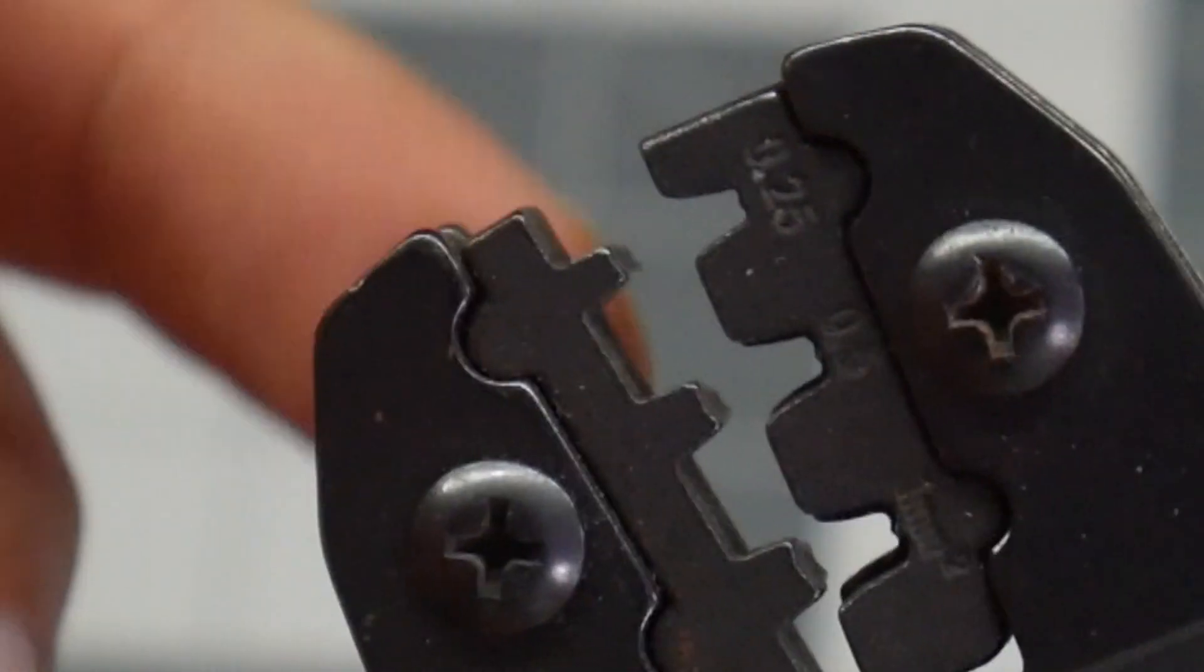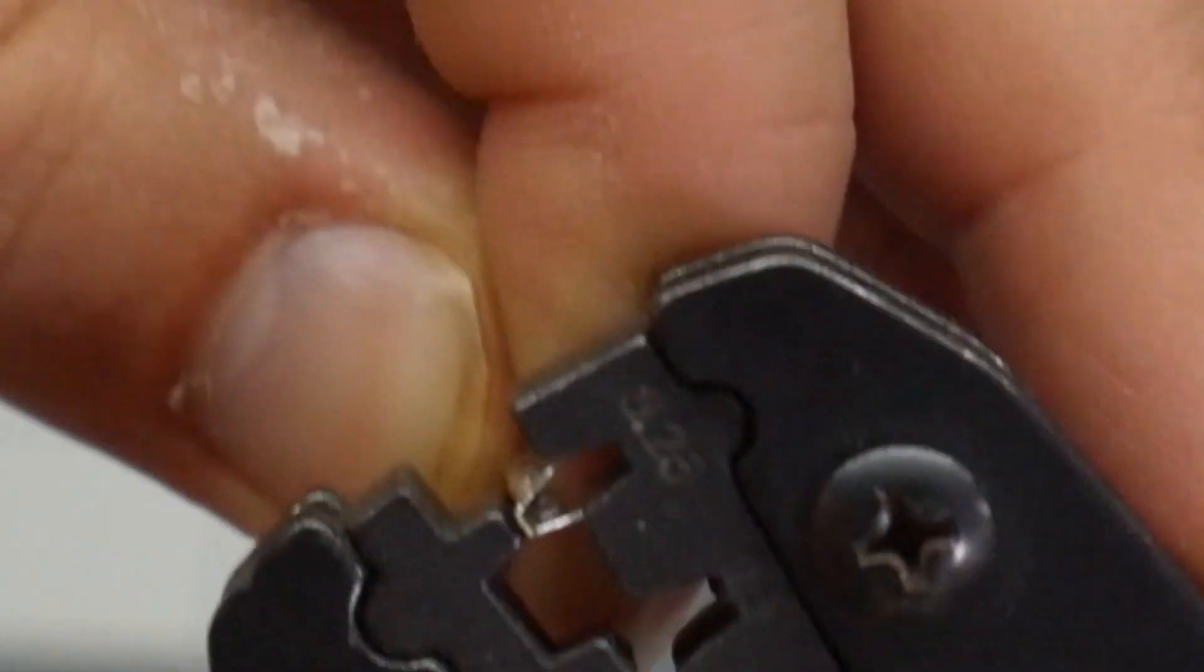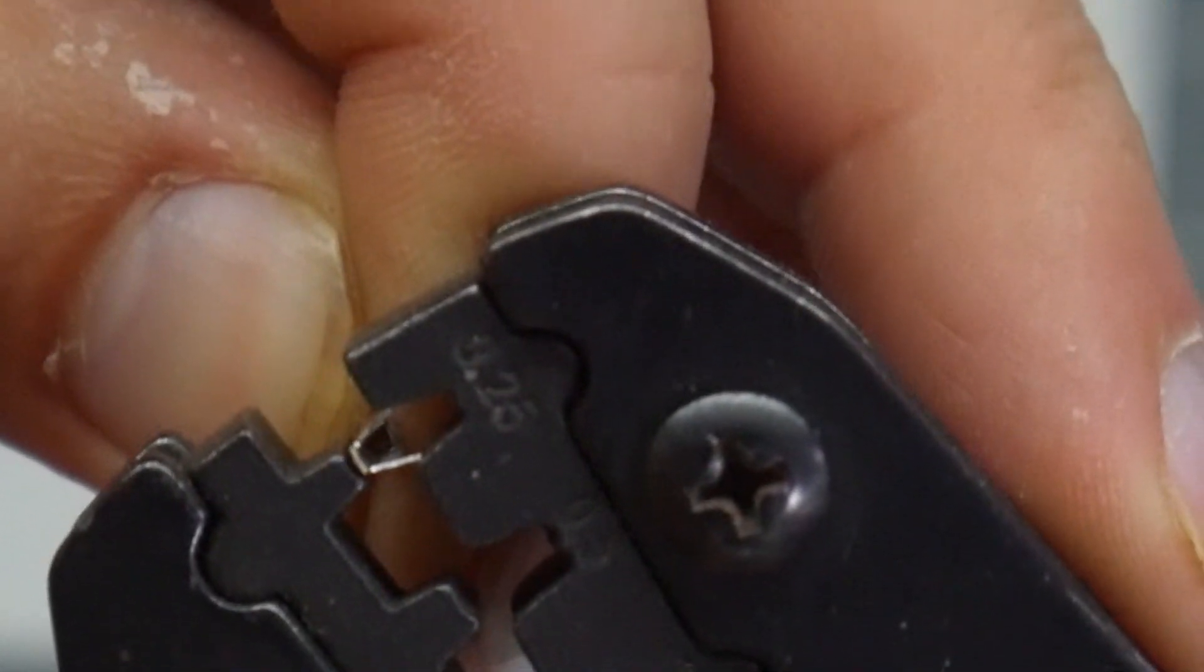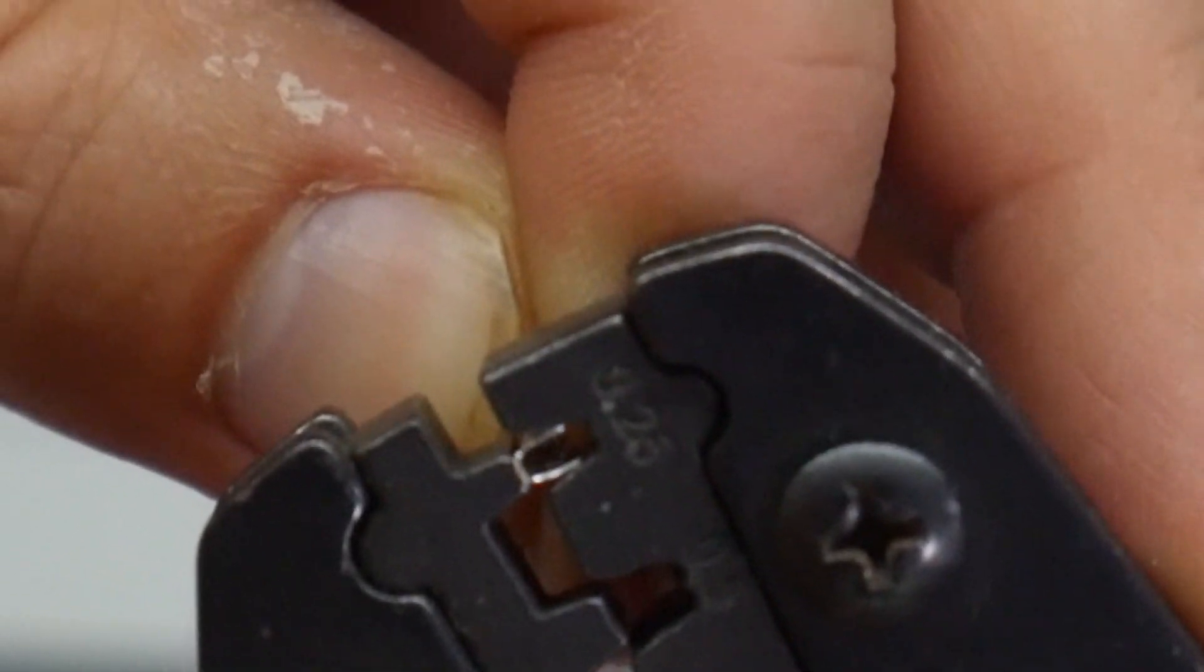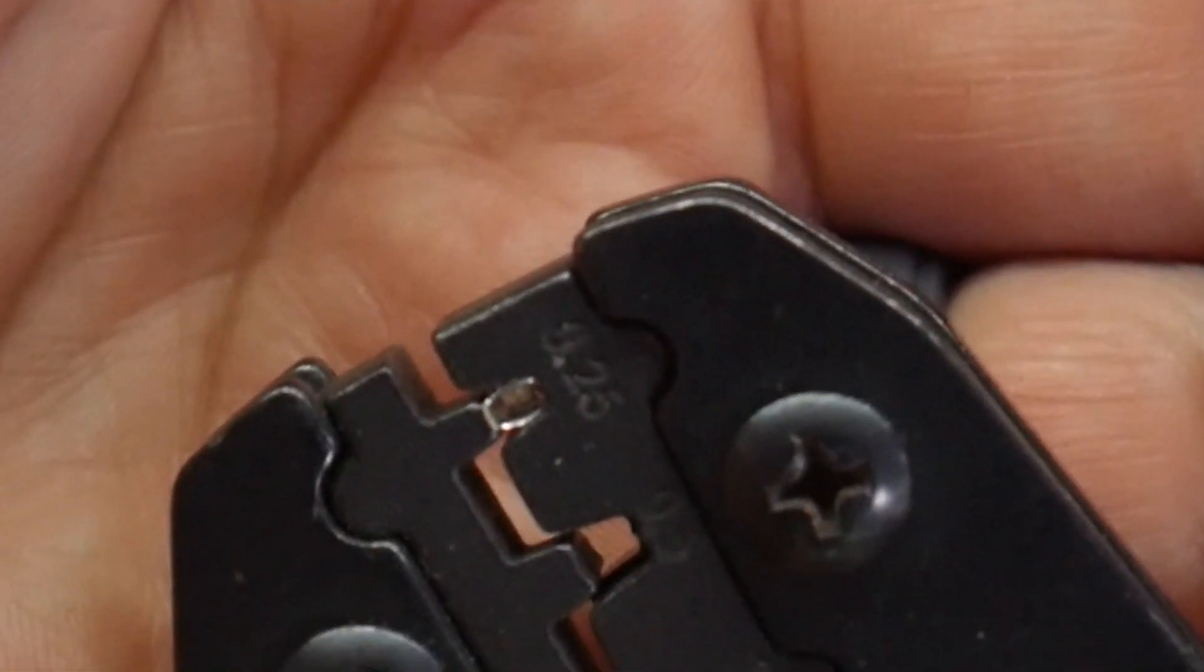Back to our crimper here. We're going to use this small one. I'm going to put my connector in there with the V up. I'm going to go until right there. The connector is in there tightly.